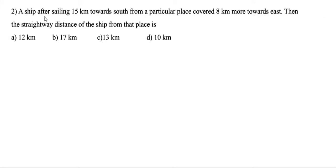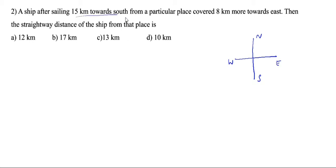Second question: A ship after sailing 15 kilometers towards south from a particular place covered 8 kilometers more towards east. Then the straightway distance of the ship from that place? First we have to draw the direction details: north, south, west, east. Towards south means this side — this is 15 kilometers. Then 8 kilometers towards east — towards east means this direction, so 8 kilometers. The ship is in this place and we need to calculate the straight distance.